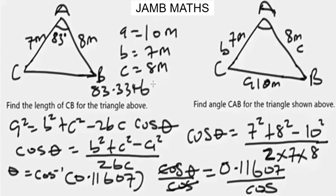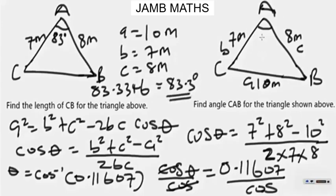To find theta, we take the inverse cosine of both sides. Therefore theta = cos⁻¹(0.11607). Punching this into the calculator gives 80.3334... degrees. To one decimal place, our final answer is 80.3 degrees. That is the angle CAB for this triangle.